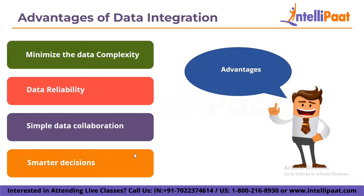Then we have simple data collaboration. Data collaboration includes accessibility, meaning the data can be quickly modified and users can easily integrate it into projects, discuss their findings, and keep the data up to date. Finally, data integration allows smarter business decisions. Integrated data refers to the process of transmitting information within a corporation so we may better understand it. An integrated dataset is far more convenient and useful, which is why it helps in making smarter business decisions.